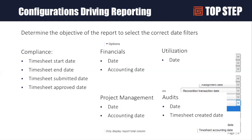For audits, things like when somebody put their August time in matter — if they created a timesheet in December for August time, that's a problem, especially when it comes to vendors. There are many combinations of time filters and time indexes that give you different reports, so consider the source of the information and the time alignment you want to include.